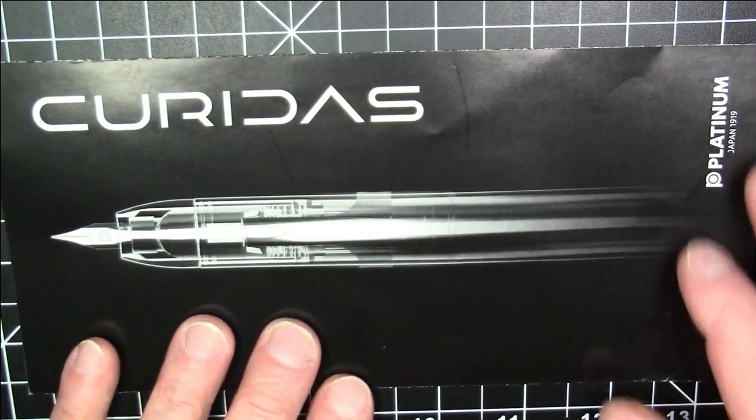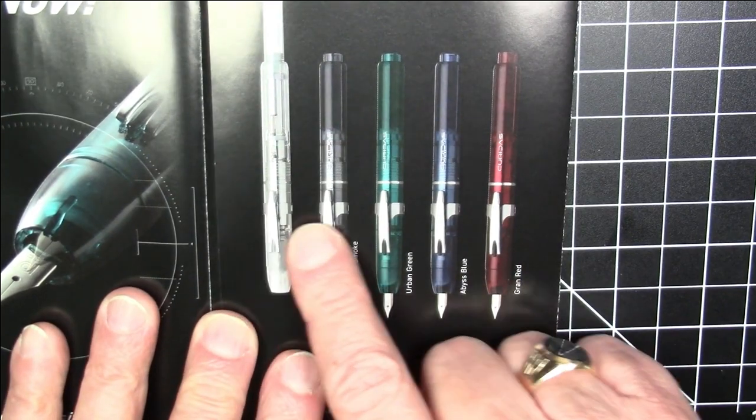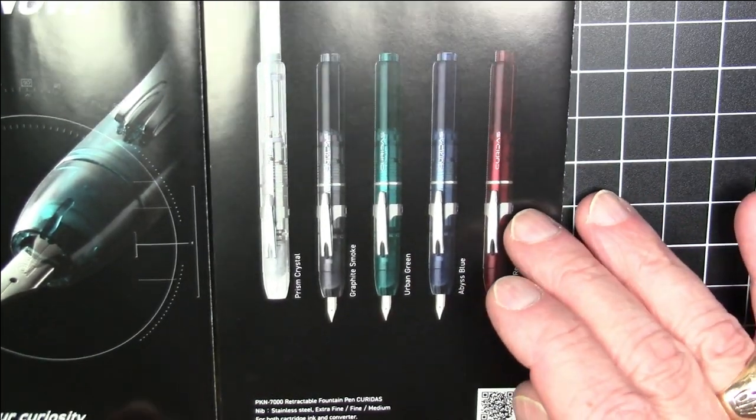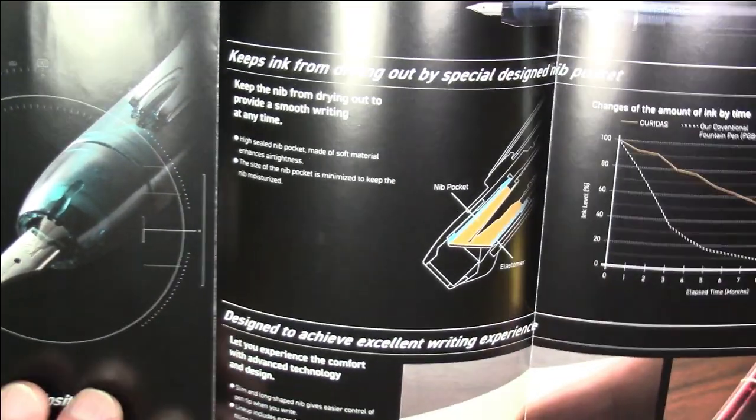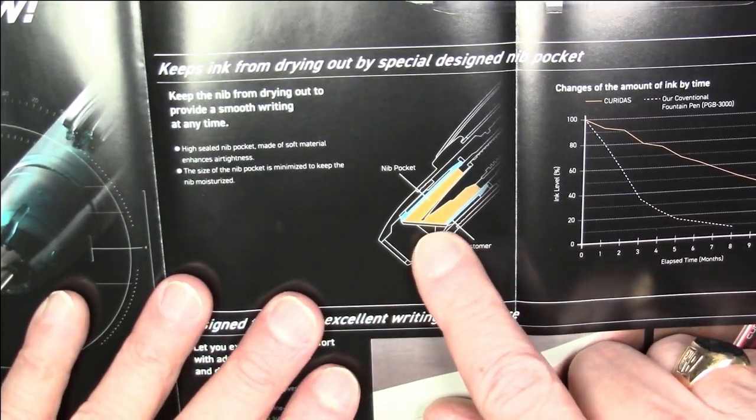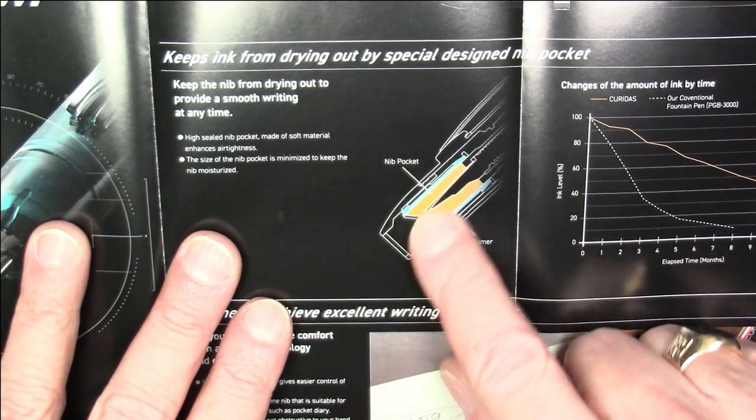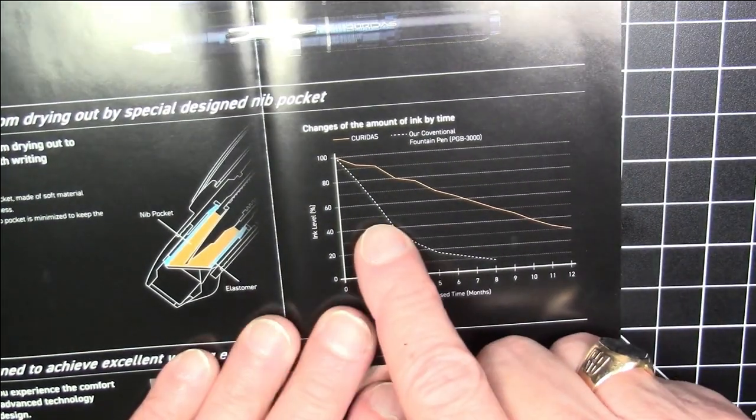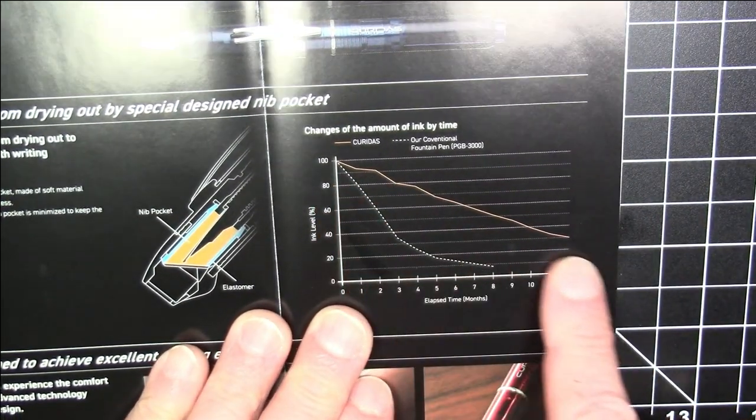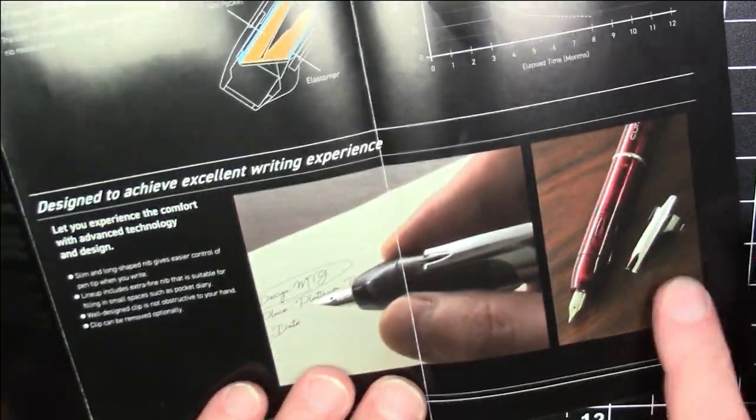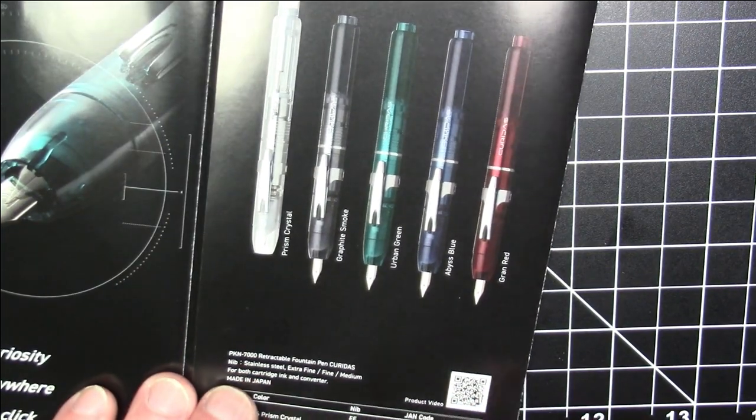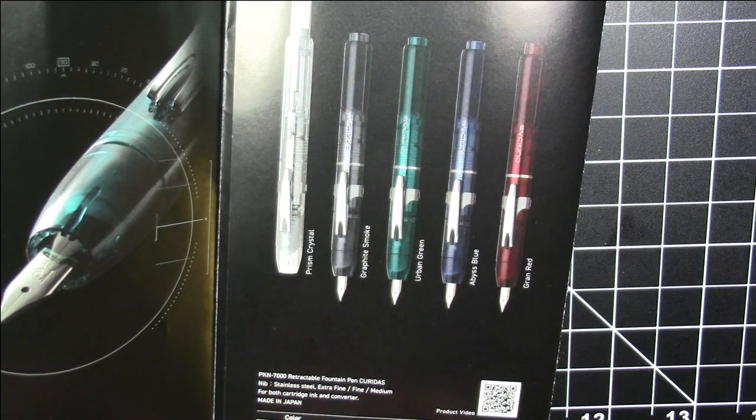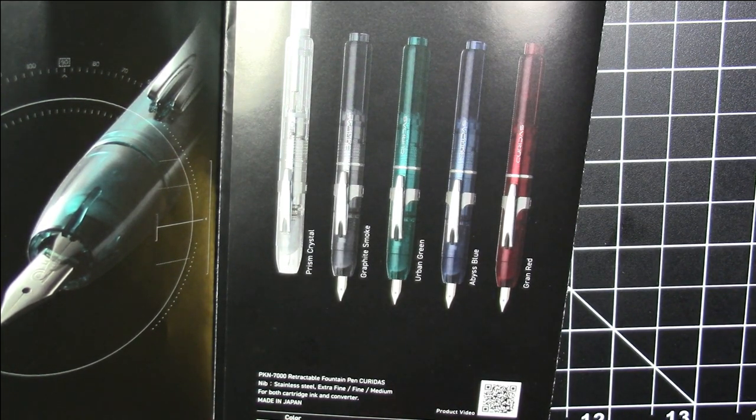We'll get to that comparison in a minute. They showed it coming in five different colors, three different nib widths: extra fine, fine, and medium. And all sorts of interesting materials about the mechanism, which looked interesting and somewhat complex. A lot of brags about how long it would last without drying out. But we didn't have a lot to go on in terms of interesting questions about materials, build quality, just what this would be like from an actual writing experience.